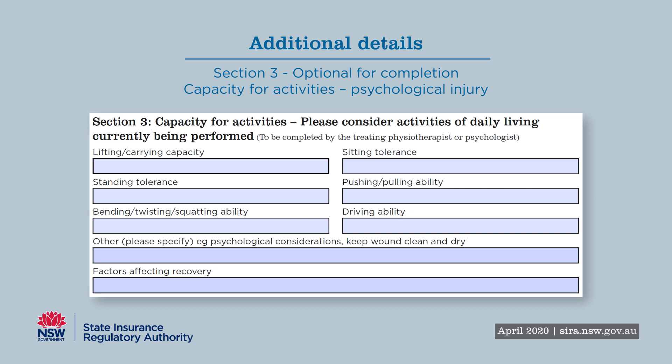For example, how long Jasmine can drive before requiring a rest due to poor concentration. Other may include: not to be alone with person X in the workplace. The last box is for comments regarding any other considerations such as the person's memory, ability to do regular activities or maintain energy levels, or how they tolerate everyday frustrations. This section assists all stakeholders to understand what functions can be performed and helps to identify tasks and employment within the individual's capacity.